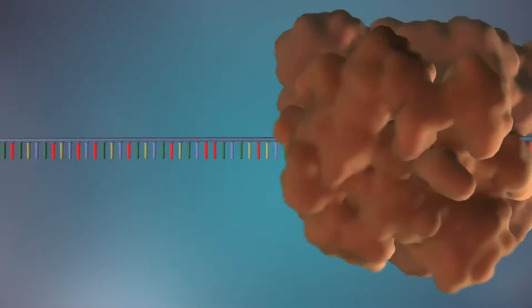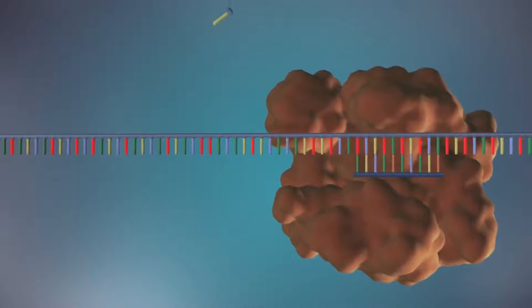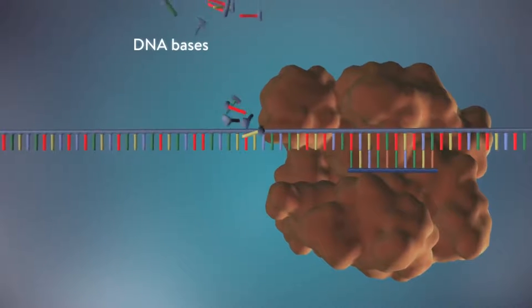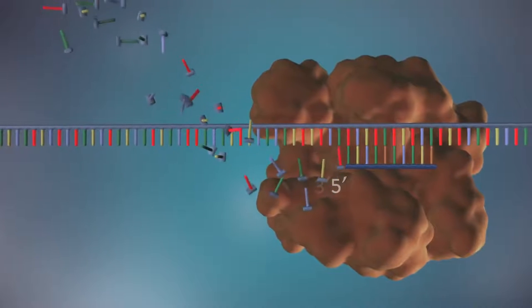An enzyme called DNA polymerase binds to the primer and will make the new strand of DNA. DNA polymerase can only add DNA bases in one direction, from the five prime end to the three prime end.